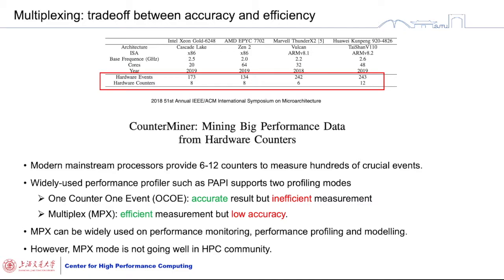So what is multiplexing? As we all know, processor hardware counters record low-level hardware events, such as the number of floating-point instructions, cache or TLB misses. However, modern processors provide hundreds of hardware events, while hardware counters are only 6 to 12. This is because the register resources on the chip are limited, which causes a problem where not every event can be recorded by one specific counter.